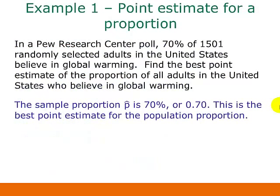Here's an example. In a Pew Research Center poll, 70% of 1,501 randomly selected adults in the United States believe in global warming. Find the best point estimate of the proportion of all adults in the United States who believe in global warming. When we're asked to find the best point estimate for the population proportion, the sample proportion is 70%, or 0.70 in decimal form. This is the best point estimate for the population proportion given the sample data.